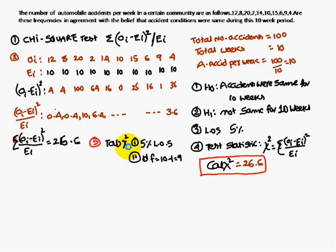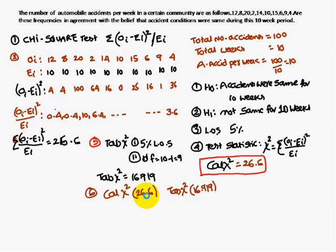The tabulated chi-square for a 5% level of significance and n-1 degrees of freedom, where n = 10 (total number of weeks), gives us 10-1 = 9 degrees of freedom. The tabulated chi-square value χ²(0.05, 9) = 16.919.